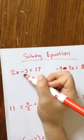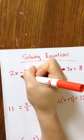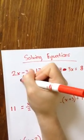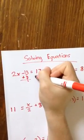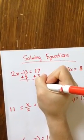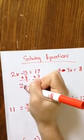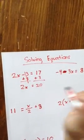So right now 3 is being subtracted from 2x. I'm going to undo that by adding 3, which will cross out, and whatever I do to one side I have to do the same thing to the other side. So 17 plus 3 is 20.